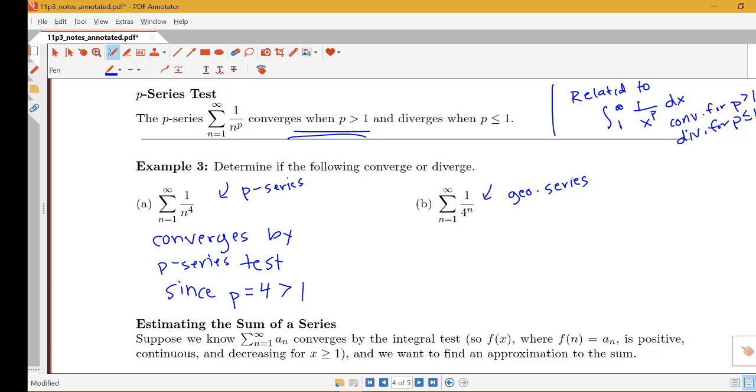Over here this is a geometric series. So notice here that r would be equal to 1/4 because this series would be 1/4 plus 1 over 4 squared plus 1 over 4 cubed etc.